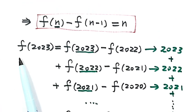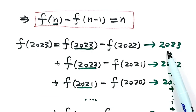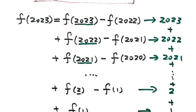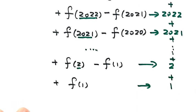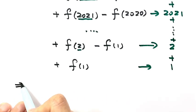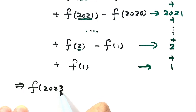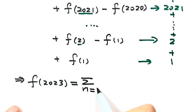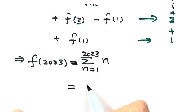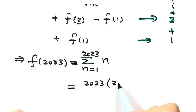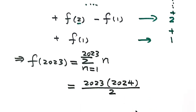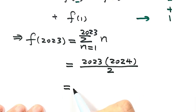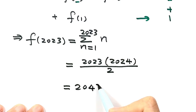So now we can see that f(2023) = 2023 + 2022 + ... + 2 + 1, which equals the sum of n from 1 to 2023. This sum equals 2023 × 2024 / 2. That is the final answer for this question.